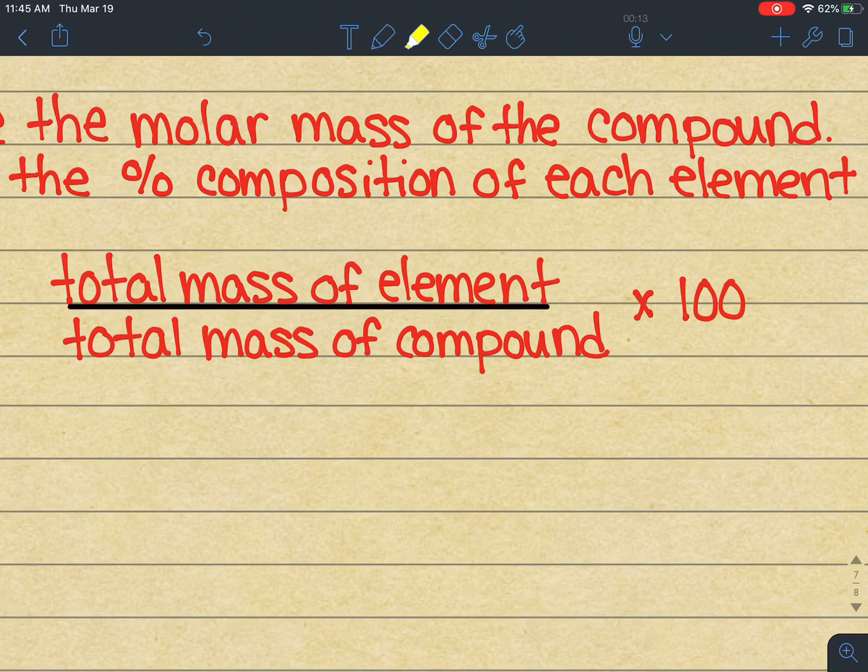This is no different than calculating a percent for any other thing you've done in math. For example, if we were looking at the number of students in the classroom who were wearing purple shoes, and let's say we had a classroom of 20 students. If five of them were wearing purple shoes, we would do five divided by 20 times 100, and that would give us 25 percent of students in the classroom wearing those purple shoes.